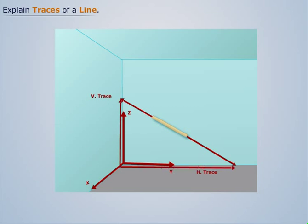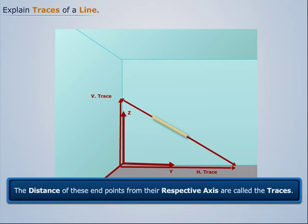This gives us the endpoints of the vertical plane and horizontal plane. The distance of these endpoints from their respective axis are called the traces.